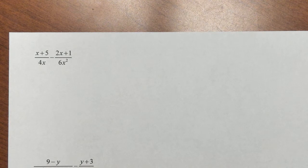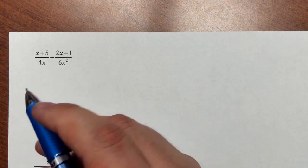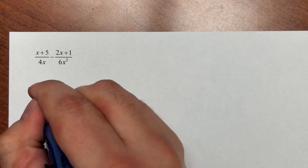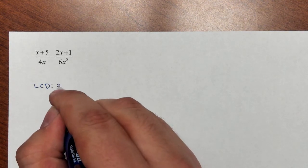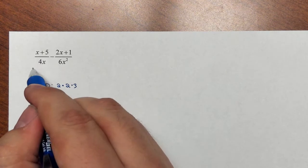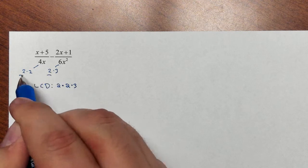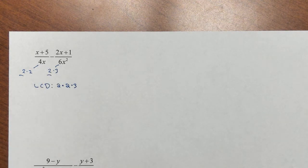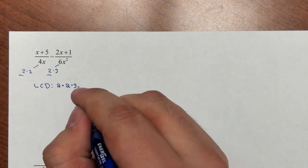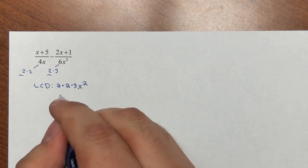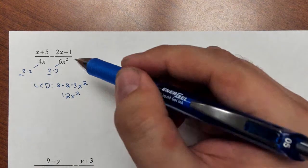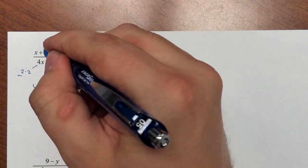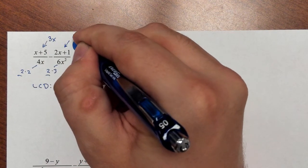Next example: (x+5) over 4x minus (2x+1) over 6x². I see denominators 4x and 6x². 4 is 2 times 2, and 6 is 2 times 3, so I need a 2, a second 2, and a 3. Both have a 2, but the first has a second 2 where the other has a 3, so I need all of those as factors. For x and x², I need x². So my LCD is 12x². The first expression needs a 3 and an x. The second expression, 6x², needs simply a 2.